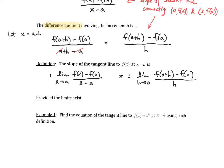This is, of course, provided the limits actually exist. The slope of the tangent line is the limit of the slope of secant lines as x gets closer and closer to a.